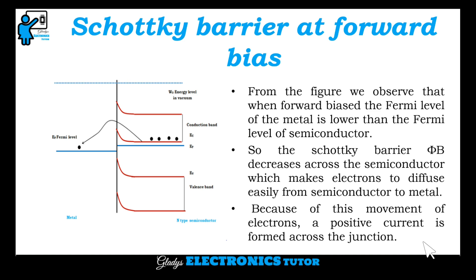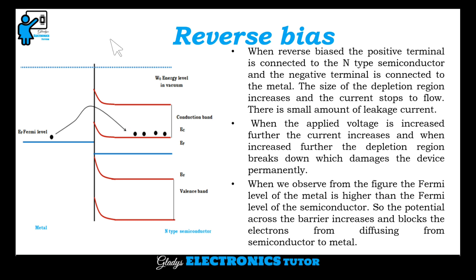Because of this movement of electrons, a positive current is formed across the junction. In reverse bias, the positive terminal is connected to the n-type semiconductor and the negative terminal is connected to the metal. The size of the depletion region increases and current stops to flow; there is only a small amount of leakage current. When voltage is increased further, the depletion region breaks down, which damages the device permanently. The Fermi level of the metal is higher than the Fermi level of the semiconductor, so the potential across the barrier increases and blocks electrons from diffusing from semiconductor to metal.